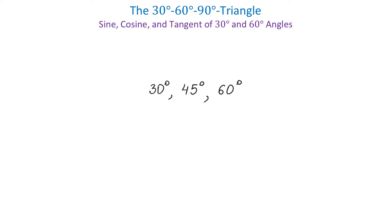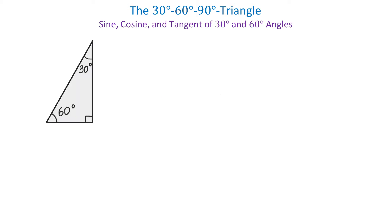Let's draw a right triangle with the acute angles of 30 and 60 degrees. Here we have the right triangle with one angle of 30 degrees, the other one of 60 degrees, and the other one of 90 degrees. To define the trigonometric functions sine, cosine, and tangent using this triangle, we need to understand the relationship between all three sides in this triangle.